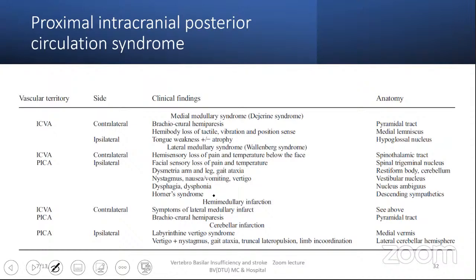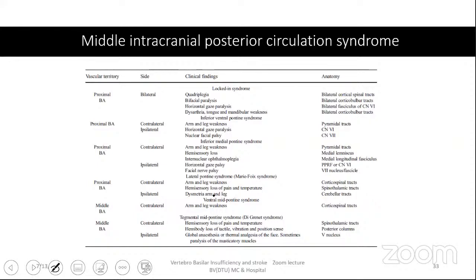If the infarct is laterally and dorsally situated, sensory ganglia are predominantly involved. PICA may involve the cerebellar region, causing labyrinthine ataxia syndrome with gait attacks, truncal lateral pulsion, and limb coordination deficits. The middle interactive posterior circulation can involve the proximal pons — giving locked-in syndrome — as well as inferior ventral pontine syndrome, inferior medial pontine syndrome, ventral mid-pontine syndrome, and mid-pontine syndrome. These give various combinations of facial paralysis, gaze paralysis due to parapontine reticular formation involvement, dysarthria, tongue weakness, and sometimes quadriparesis.